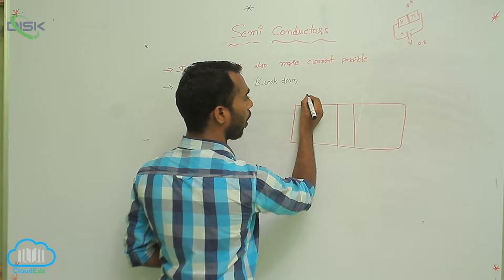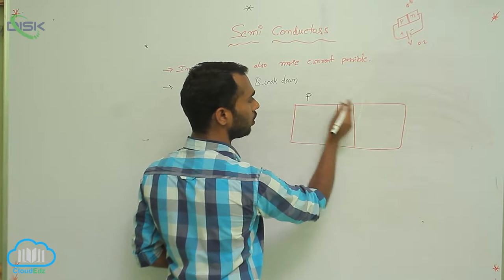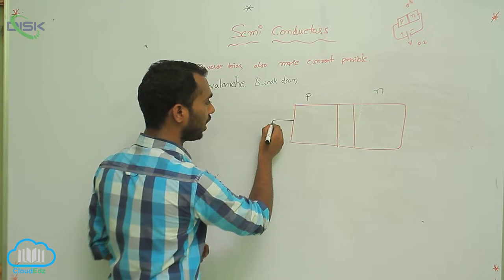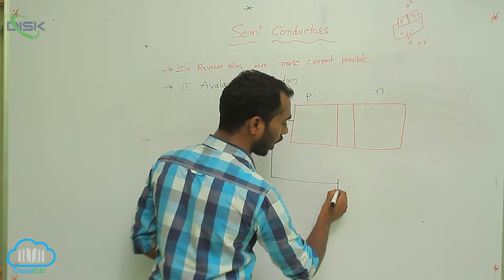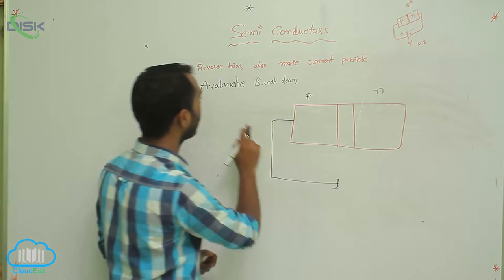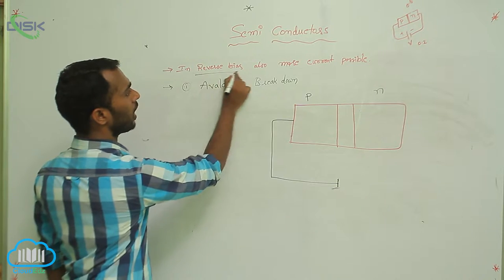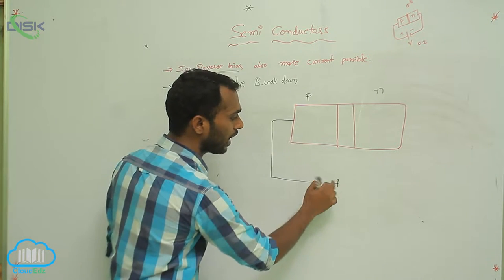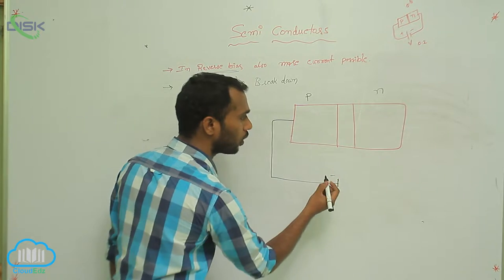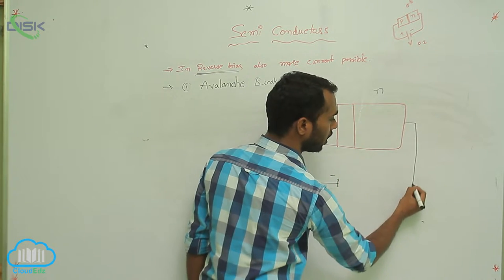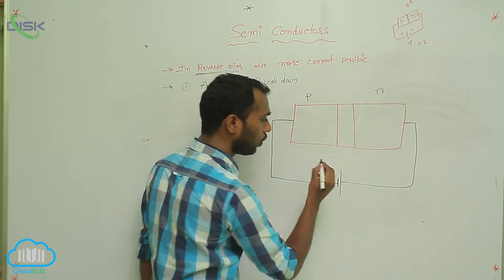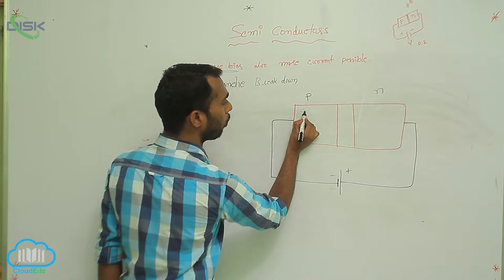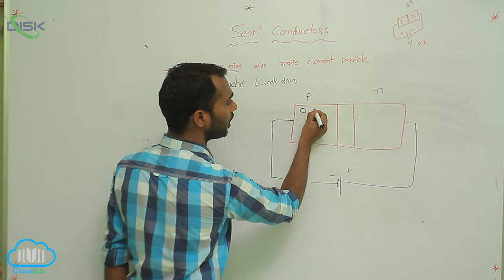Now, this is the P-part and this one is the N-part. The P-part is connected to the negative terminal of the battery. Why? Because avalanche breakdown is explained in reverse bias only. P means positive — majority charge carriers are holes.